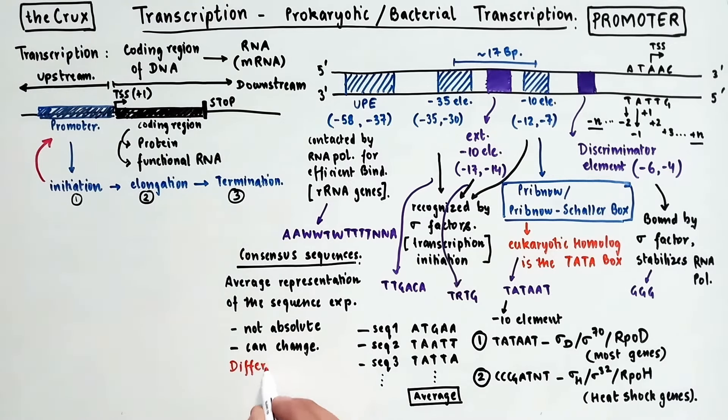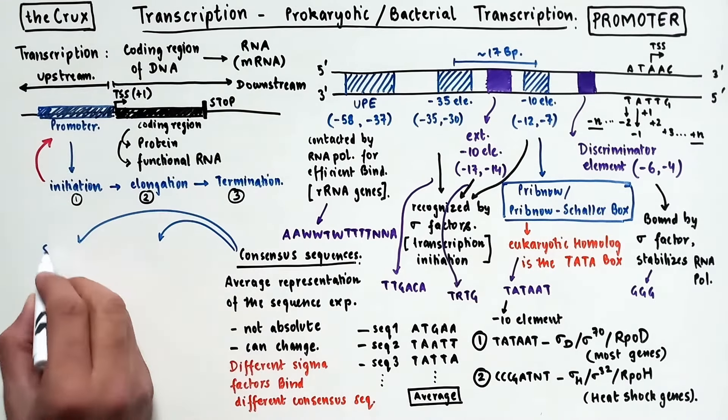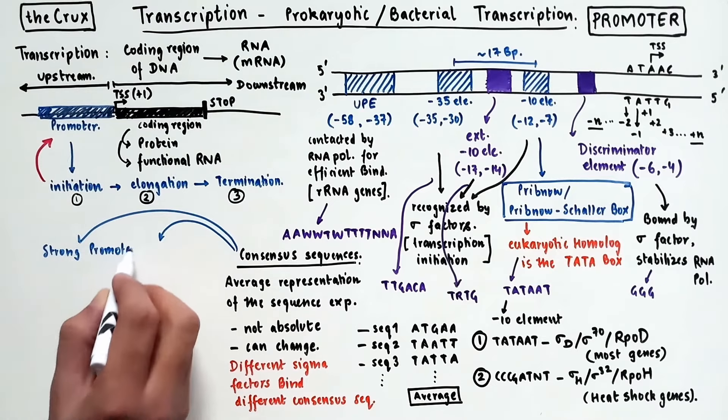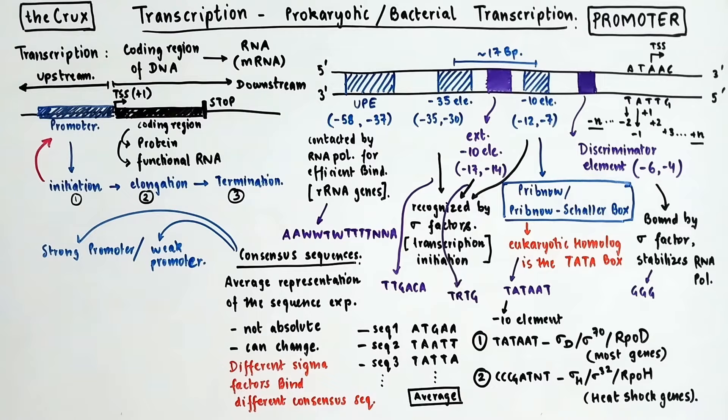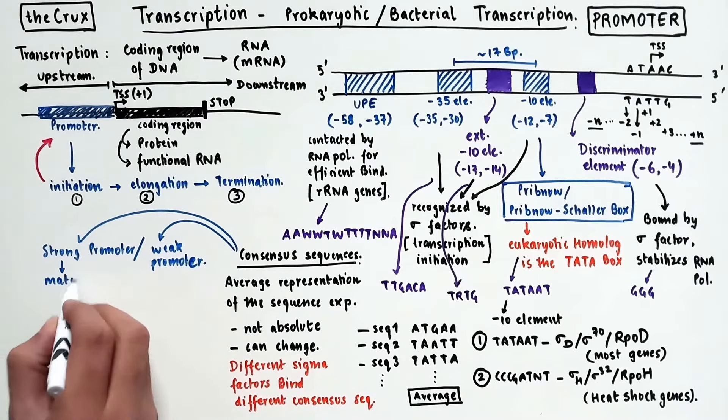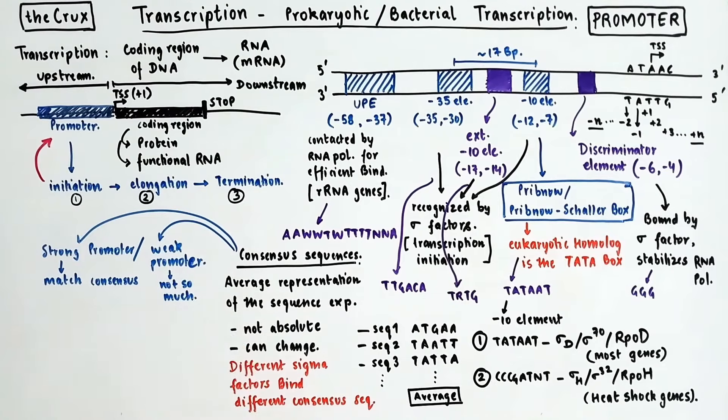So, there are different sigma factors involved in the promoter binding. And I have a link in the description if you want to read more about them. Now, depending on the promoter sequence, the promoters can either be strong or weak. That is, the measure of how many transcripts they can produce in a given time. The strong promoters usually match their respective consensus fairly well. And weak ones deviate.